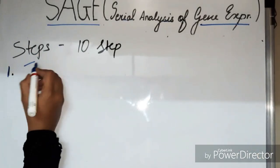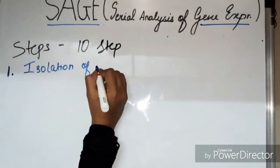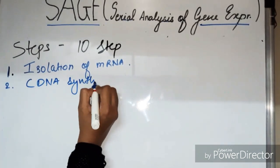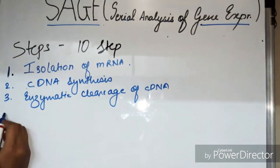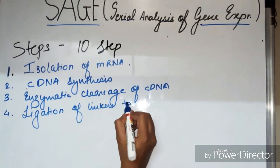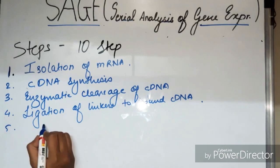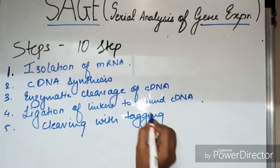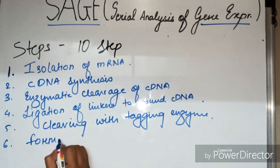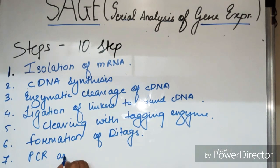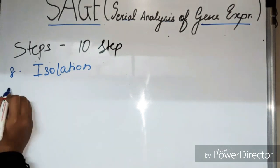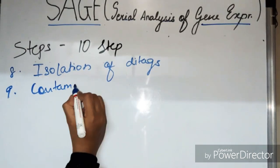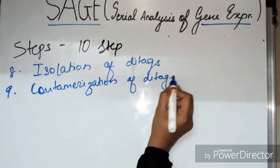The Serial Analysis of Gene Expression is carried out in ten steps: Step 1 is isolation of mRNA; Step 2 is cDNA synthesis from mRNA; Step 3 is enzymatic cleaving of cDNA; Step 4 is ligation of linker to bound cDNA; Step 5 is cleaving with a tagging enzyme; Step 6 is formation of di-tags; Step 7 is to amplify the di-tags; Step 8 is to isolate the di-tags; Step 9 is concatemerization; and Step 10 is cloning and sequencing.